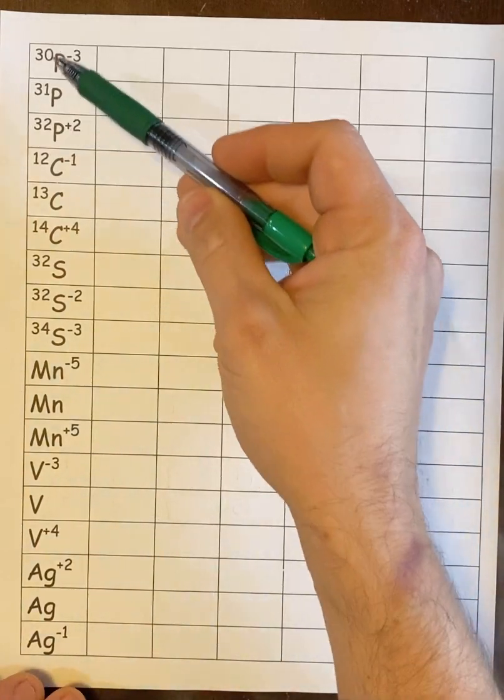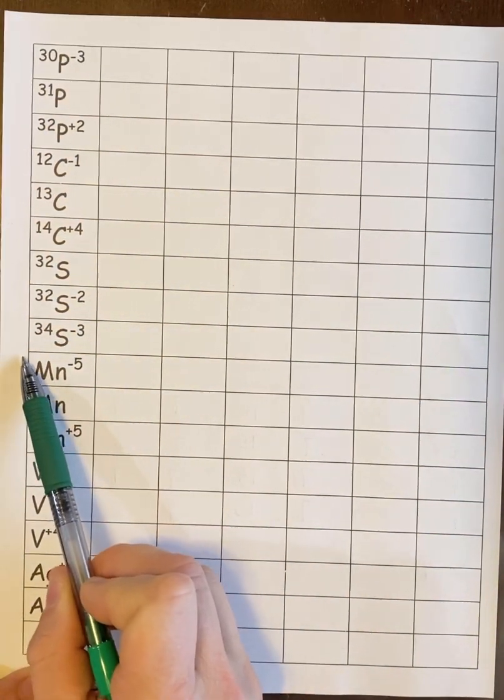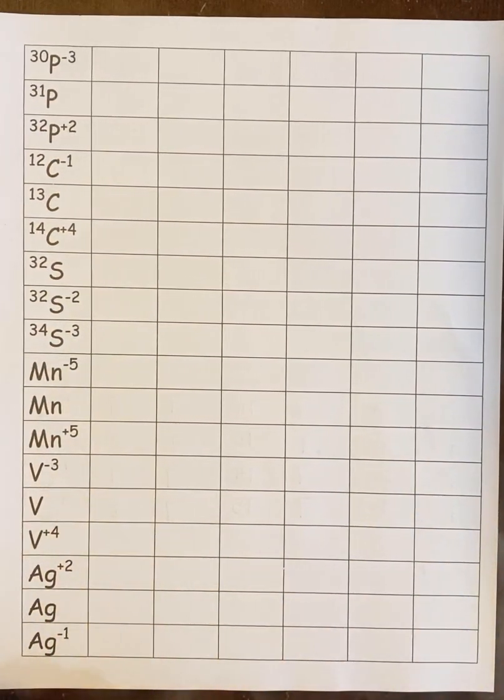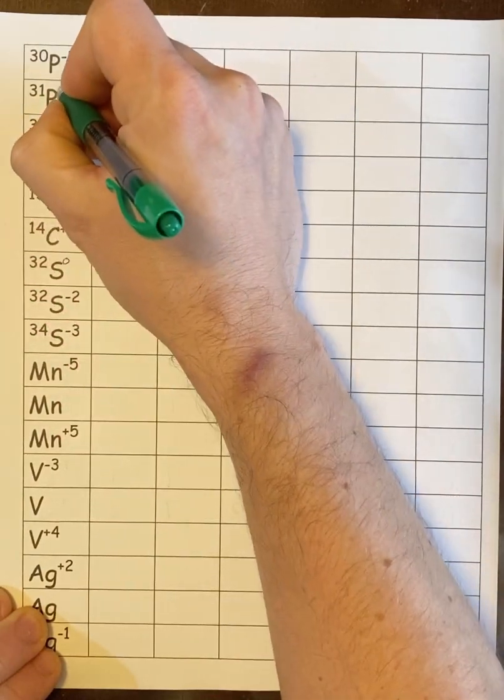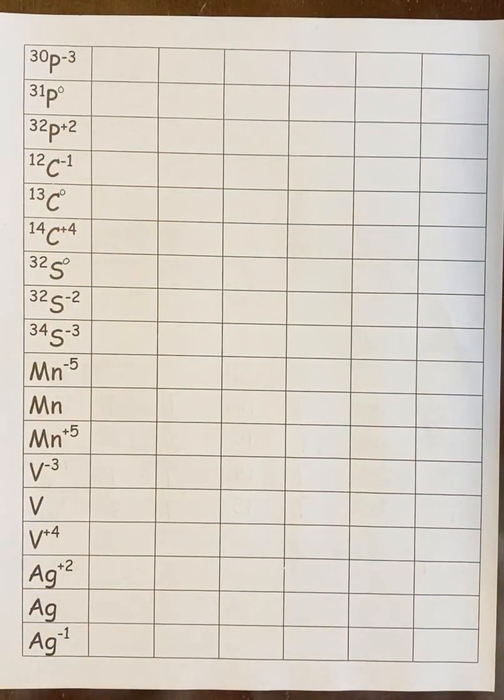So when you get down to here, this Mn, if you notice, there's no mass written in. Now, up until now, I've been telling you if there's no charge, then you assume that the charge is 0, which is true. If you have no way of knowing the charge, you assume the charge is 0, which for this worksheet is fine.